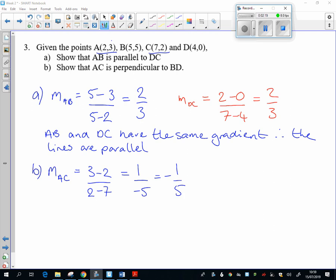So that's the gradient of AC: minus a fifth. So I'm hoping the gradient for BD is going to come out as five. Let's just double check that it does. So BD, I'm going to do B take away D: five take away zero over five take away four, which is five over one, which is five.